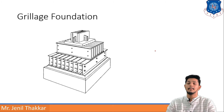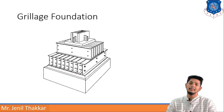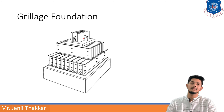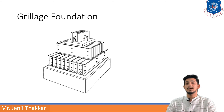Grillage foundation consists of different layers: a base of RCC or PCC, above which steel I-beams or girders are placed in one direction, and another layer of I-beams in the transverse direction. These are then connected to the column using steel connections. Grillage foundations are used in steel or industrial buildings. They are very heavy and costly foundations.